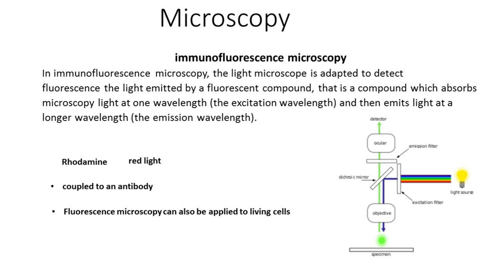First, the fluorescent compound is chemically coupled to an antibody specific for a particular protein or other macromolecule in the cell under investigation. Then the fluorescently tagged antibody is added to the tissue section or permeabilized cell, and the specimen is illuminated with light at the exciting wavelength.